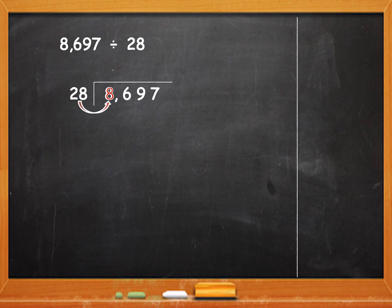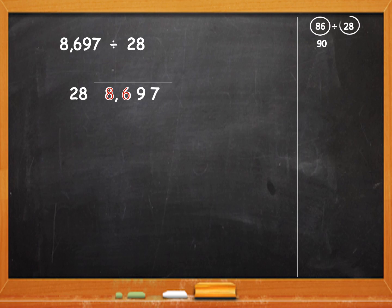Coming back to the division: 8 cannot be divided by 28, so we take 8 and 6 together. 86 by 28. To know how many times 28 will go in 86, I will write that in the rough column. I will share a simple trick with you which will make it easy. You know rounding off to the nearest tens — we will round off the numbers. 86 will be rounded off to 90 and 28 will be rounded off to 30. Now, can you divide 90 by 30? Just cancel the zeros and divide 9 by 3, which is equal to 3.